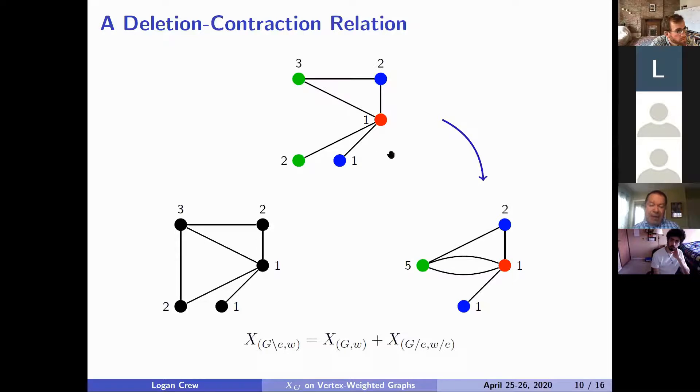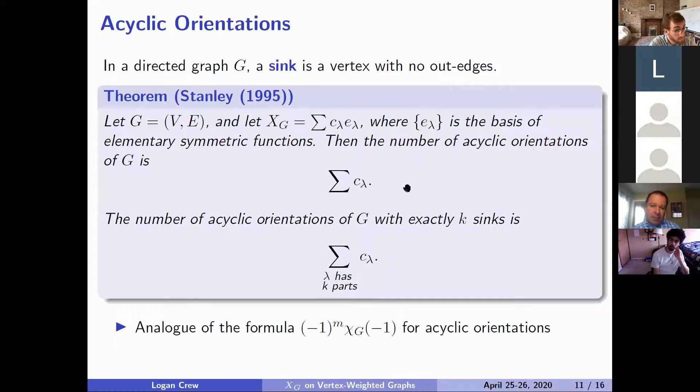So for example let me briefly illustrate using this. If this green is one and this blue is two and this red is three then that corresponds to a monomial x1 to the fifth x2 cubed x3 its exponent has a partition 5, 3, 1. That is the partition the integer partition corresponding to the weights of these color classes. That's what these lambdas are representing. And so if you sum only those coefficients in the e_λ basis where lambda has exactly k different numbers, k different parts that gives you the number of acyclic orientations of G with exactly k sinks.